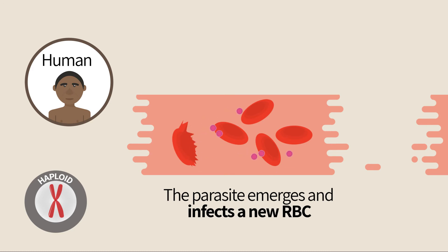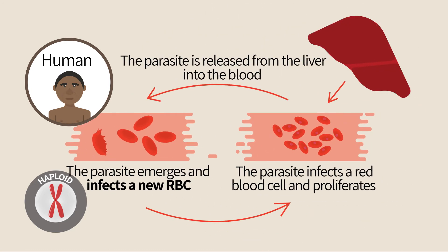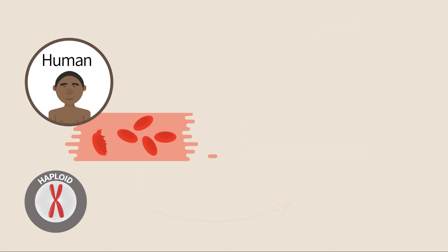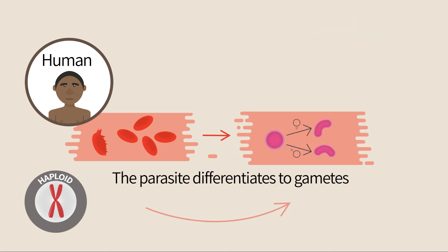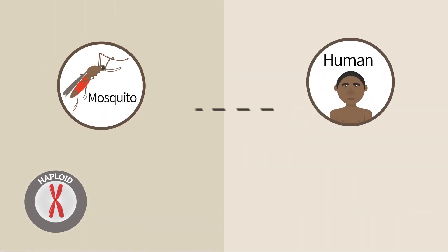The symptoms of the malaria disease are caused by these proliferation cycles in the blood. In each cycle, a small number of parasites differentiate into gametes. When the mosquito sucks blood from a sick person, she swallows these gametes and they reach her digestive system.